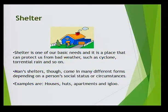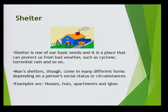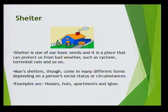We also need shelter to protect us from bad weather. It is also one of our basic needs. It protects us against cyclone, torrential rain and so on. People have shelters in many different forms depending on their social status or circumstances. Examples of shelter are houses, huts, apartments and igloos.